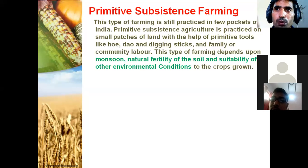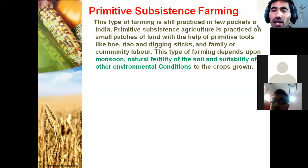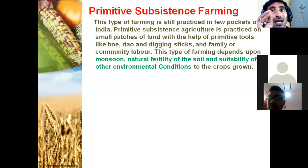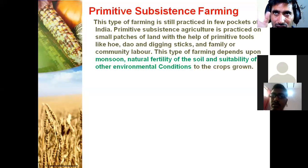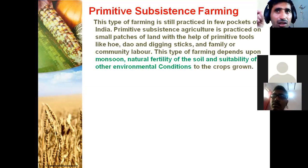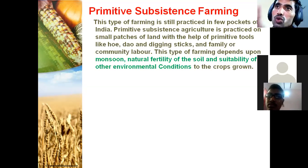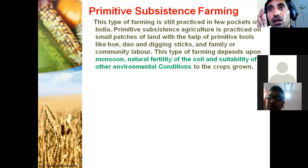Over the years, cultivation methods have changed significantly. They changed due to three factors. The first is the characteristics of the physical environment — meaning the physical environment in which we are living. The agriculture pattern and type of farming also depend on the physical environment of a particular place.